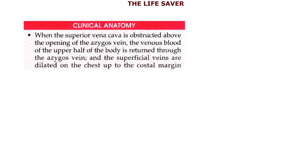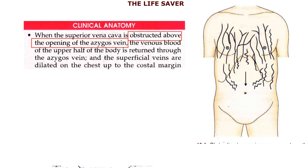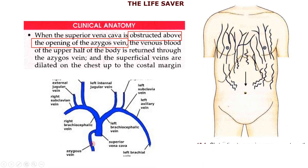Now we are going to discuss the important clinical significance related to the Superior Vena Cava, which is its obstruction. If the Superior Vena Cava is obstructed above the level of the azygous vein, then the venous blood from the upper half of the body is carried by the azygous vein and the collateral vessels. That is why the vessels present on the chest become dilated up to the level of the costal margin.